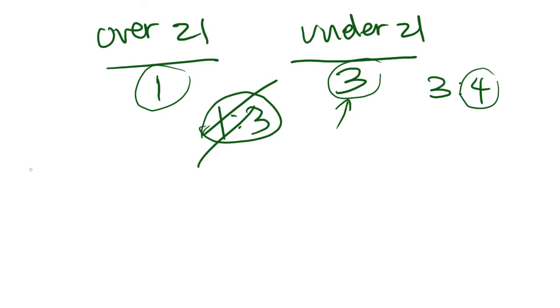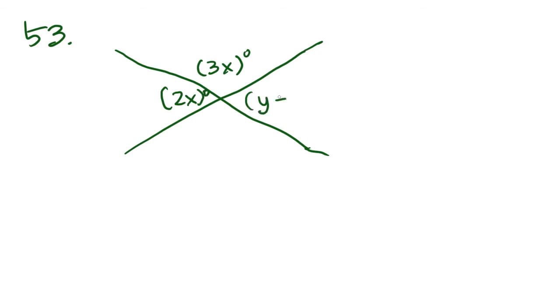Anyway, let's continue on to number 53. Number 53 has an X in the middle, and let's just pretend that these are perfectly straight lines. 3X degrees, and on the left here you have 2X degrees, and Y plus 30 degrees. Remember, these are supposed to be straight lines. Here, the GMAT is testing your knowledge of more geometry rules.